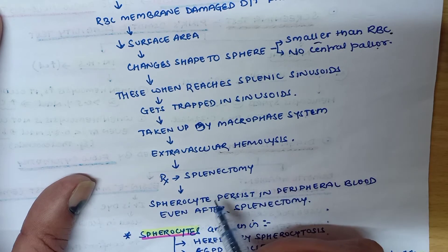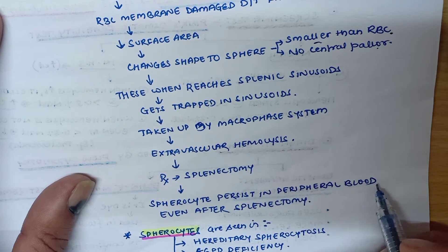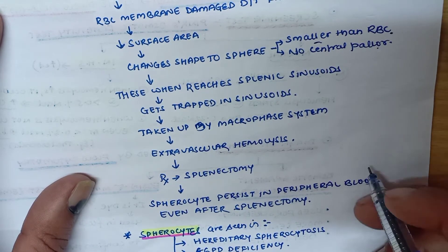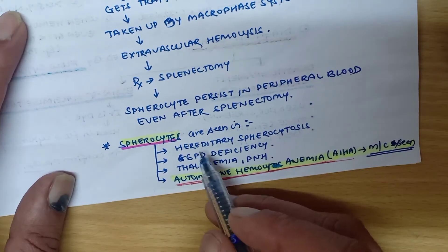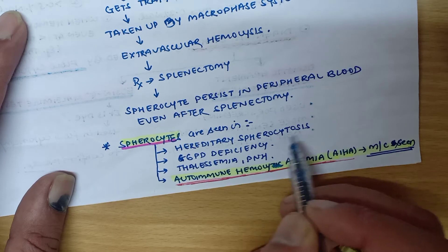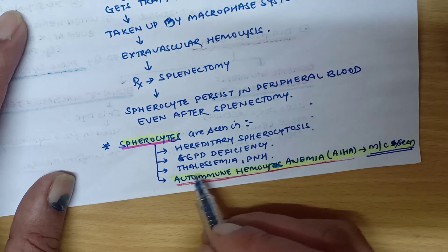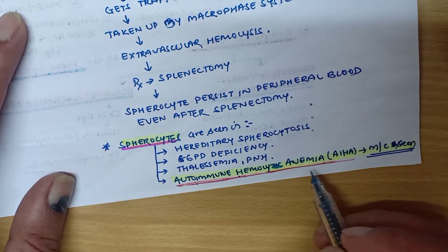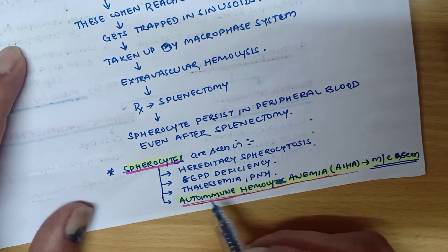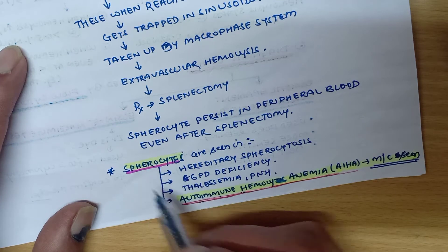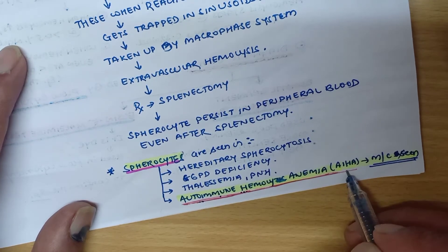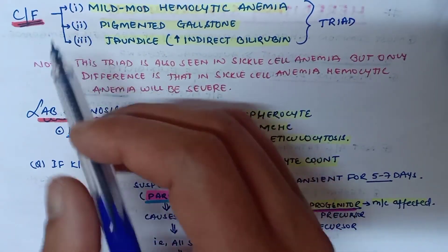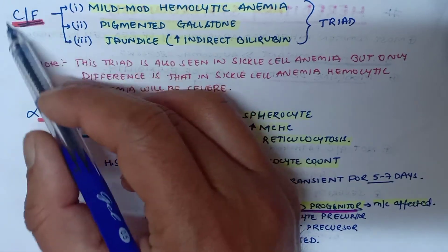Even after splenectomy, you will be able to see spherocytes in the peripheral blood — spherocytes persist even after splenectomy. Spherocytes are also seen in G6PD deficiency, thalassemia, paroxysmal nocturnal hemoglobinuria, and autoimmune hemolytic anemia. We must remember that spherocytes are most commonly seen in autoimmune hemolytic anemia.